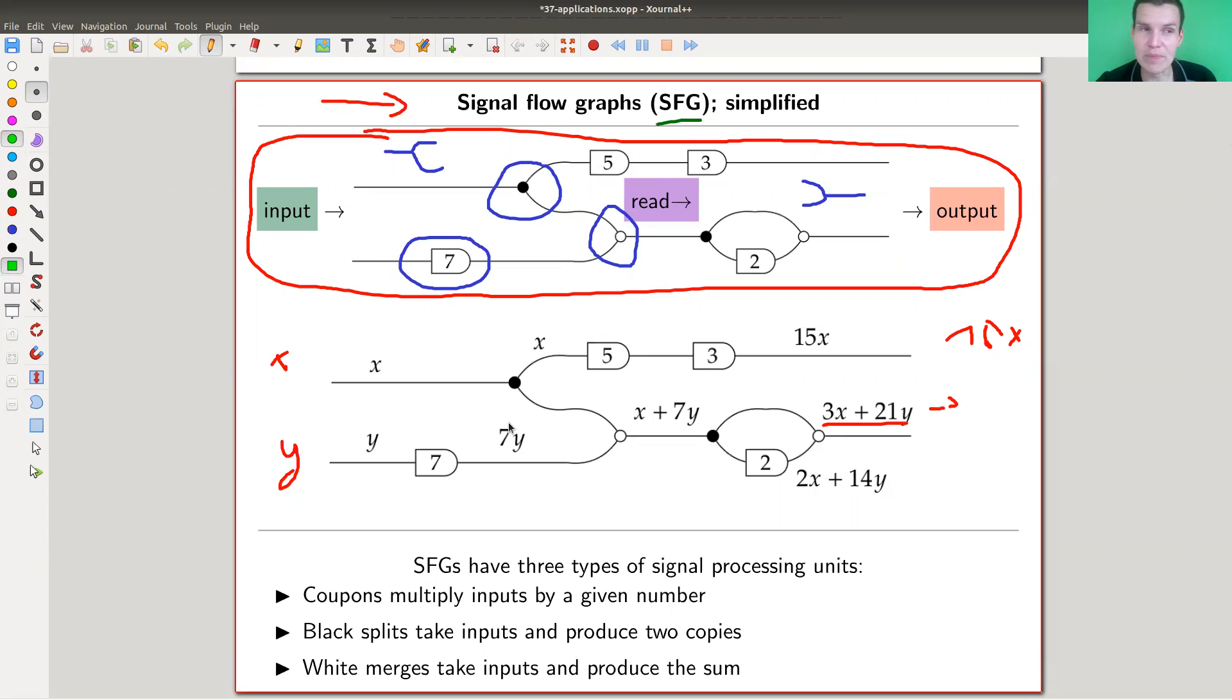Here's how you should think about it. It's kind of mimicking multiplication, addition, and so on. You stick in some input x and y, some numbers, and whenever you hit a black vertex you just split it off into two ways. Whenever you hit a white vertex you just add whatever you see. Remember we're reading in this direction, so x and 7y is this guy. Whenever you go through a coupon you just multiply. This is really a way to mimic multiplication in a diagrammatic way.